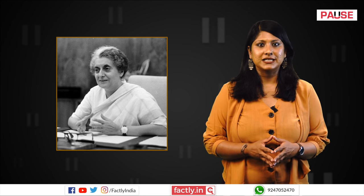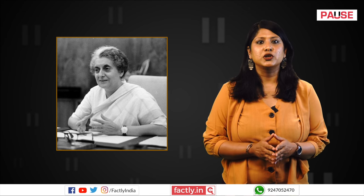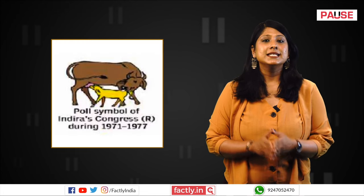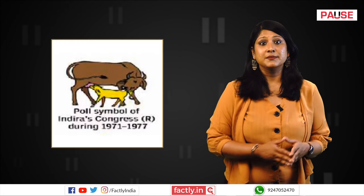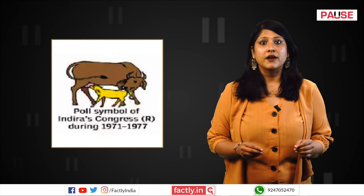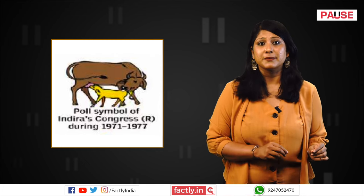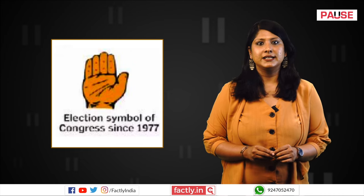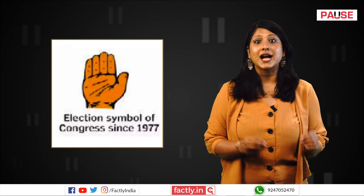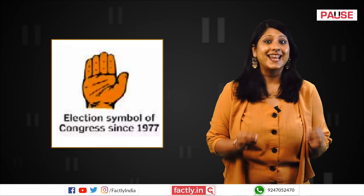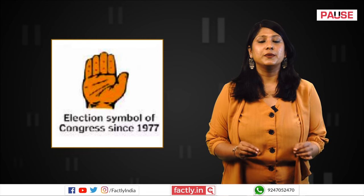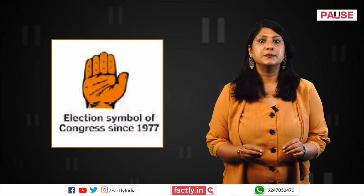In 1969, owing to internal conflicts within the party, Indira Gandhi, backed by a majority of Congress members, chose to establish a new party known as the Congress R. From 1971 to 1977, its symbol was the cow-calf. However, following the loss of support from 76 of its 153 members in the Lok Sabha, a new political entity named Congress I emerged in preparation for the 1980 elections, subsequently adopting the open palm symbol under Gandhi.